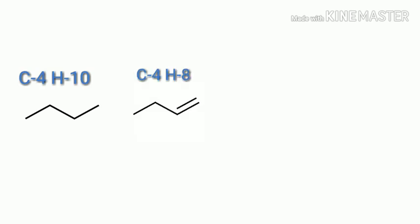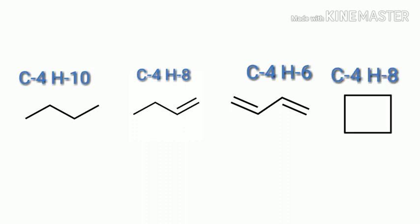Consider butane C4H10, butene C4H8, butyne C4H6, and cyclobutane C4H8. The degree of unsaturation for the first compound is zero, the second is one, the third is two, and cyclobutane's degree of unsaturation is one.